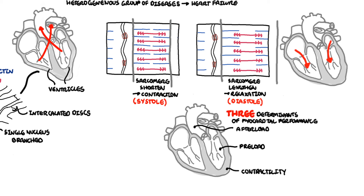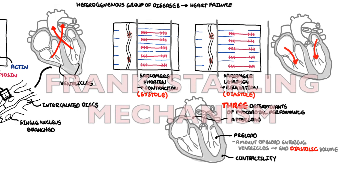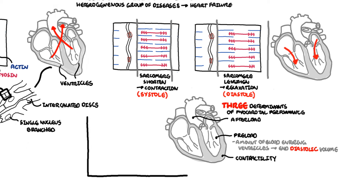Focusing on the ventricular cardiac muscle cells, preload is the amount of blood entering the ventricles during diastole, when the heart is relaxing. An increase in preload means a stronger contraction. This relationship is the Frank-Starling relationship, depicted with a graph showing diastolic volume on the x-axis versus stroke volume — the volume of blood ejected by the heart with each contraction.